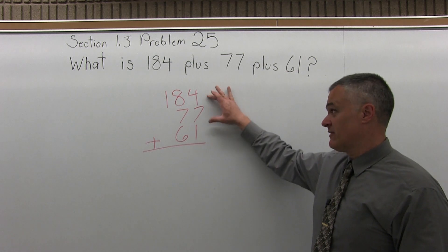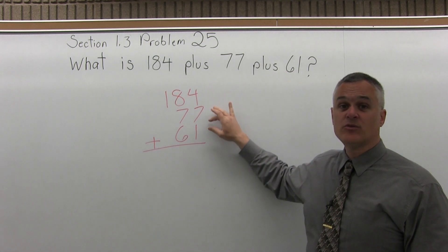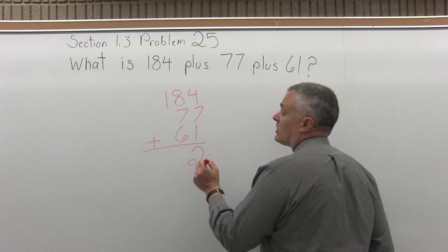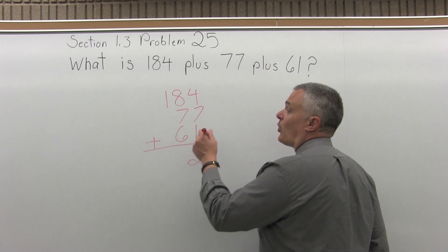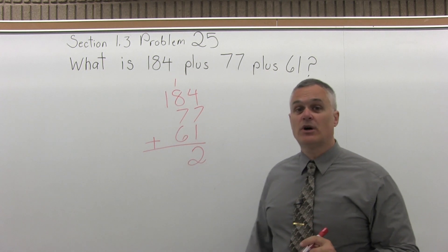So the rightmost column of digits, I'll have to add 4 plus 7 plus 1. So 4 plus 7 is 11. 11 plus 1 more is 12. So for 12, I'll write the 2 from the 12 into the column of digits that I just added. Take the 1 from the 12 and carry it to the top of the next column of digits that I have to add.